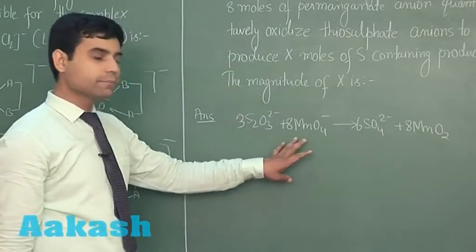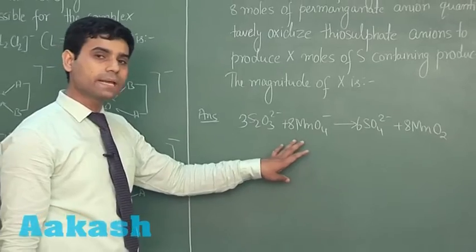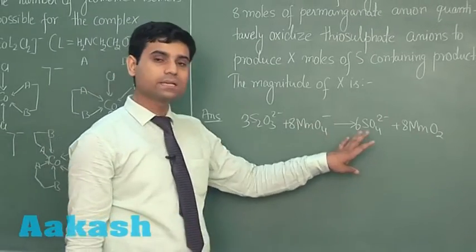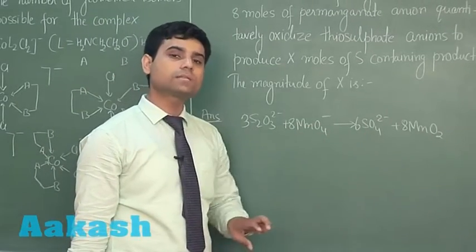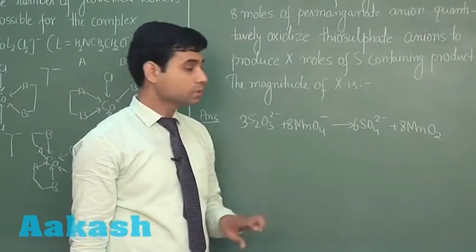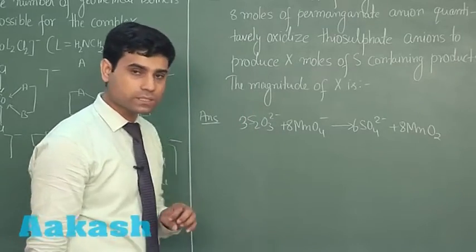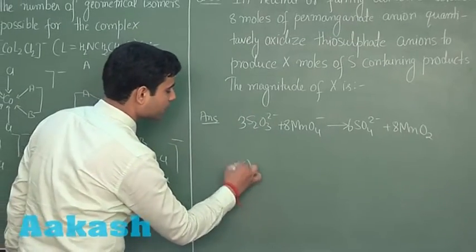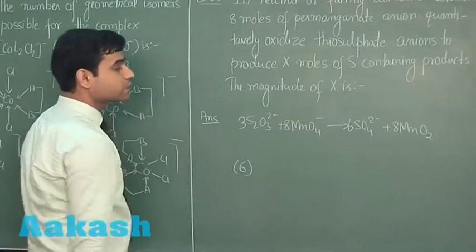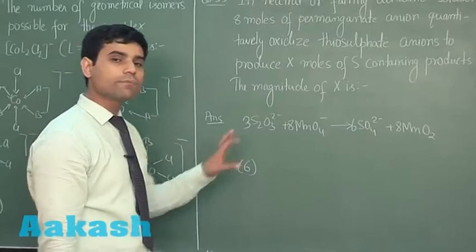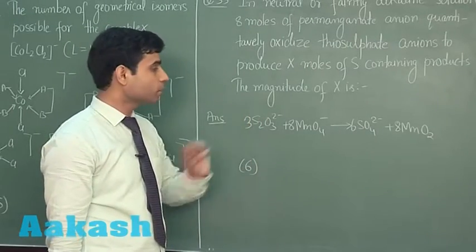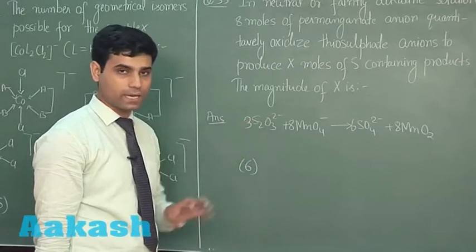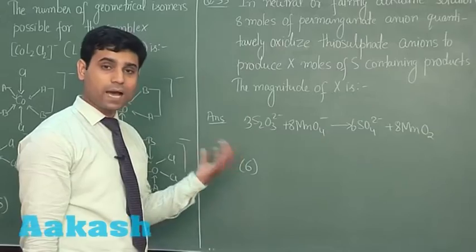Here we can see 8 moles of permanganate ions are giving us 6 moles of sulfate ions. So the correct answer for this question is 6 — we are getting 6 moles of sulfur-containing product, which is 6 moles of sulfate ion.